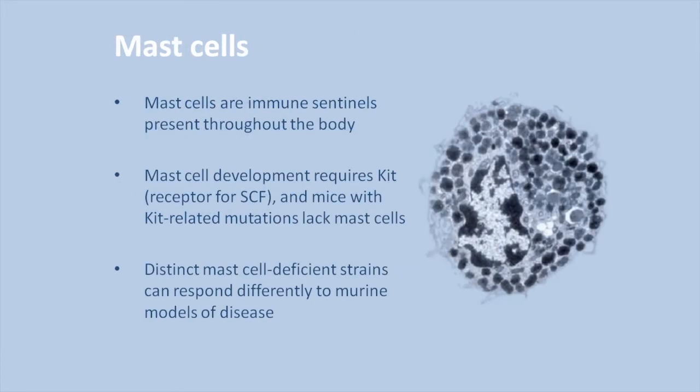Mast cells are immune sentinels distributed throughout the body, including in the lining of the joints. Mast cell development is highly dependent on kit, the receptor for stem cell factor. Mice with defects affecting kit often lack mast cells; mast cell deficiency can also be engineered in other ways. Interestingly, sometimes different mast cell deficient mice respond differently to animal models of disease. These discrepancies have led to considerable controversy within the mast cell field.